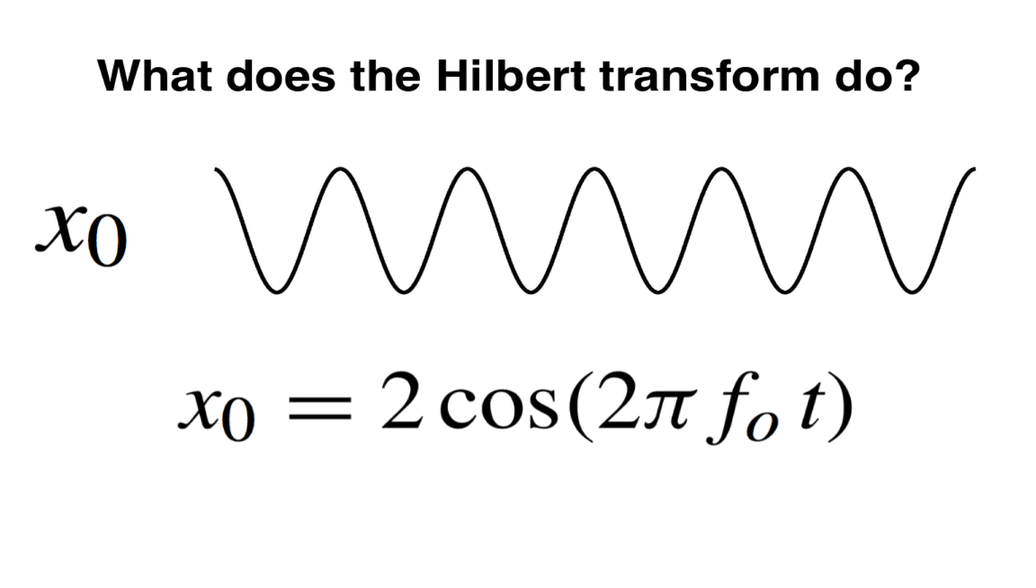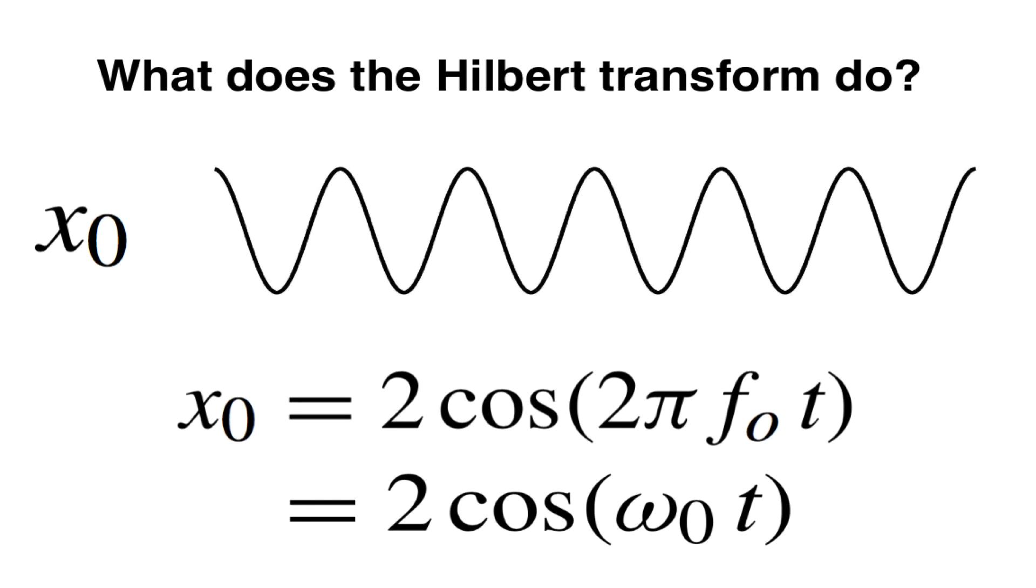So we can write it like this, x0 is equal to 2 times the cosine of 2 pi times our frequency f0 times t, or let's call that 2 times the cosine of omega0 t.